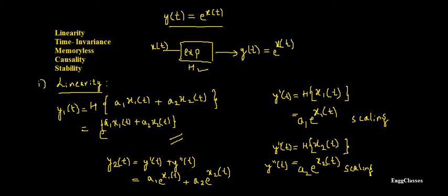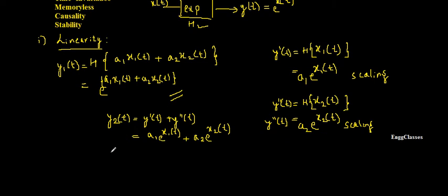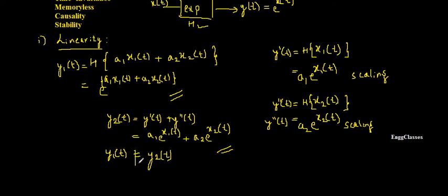To determine if the system is linear, I check whether y1(t) equals y2(t). Comparing the two expressions, e^(a1·x1(t) + a2·x2(t)) is not equal to a1·e^x1(t) + a2·e^x2(t). Hence the system is non-linear.